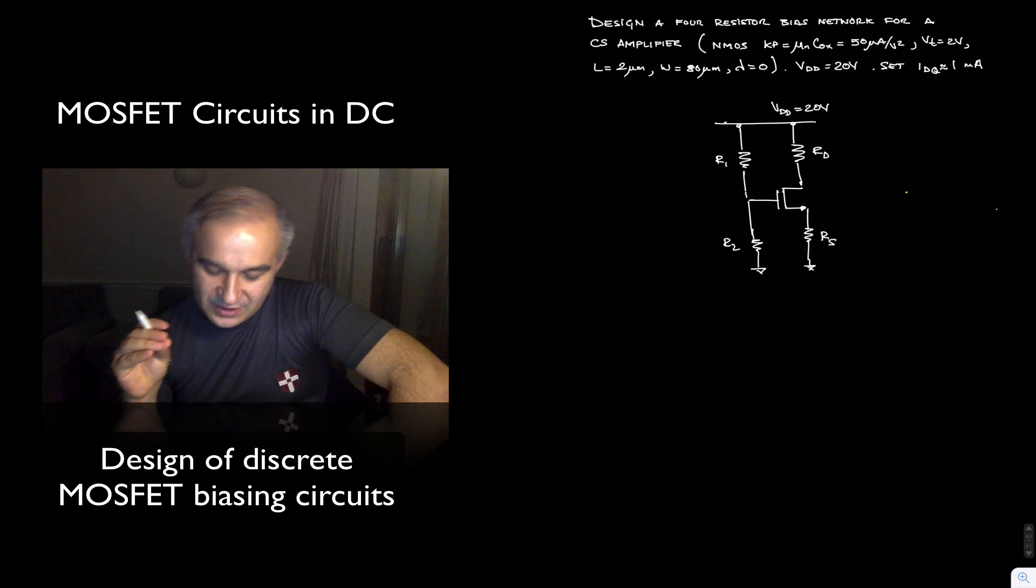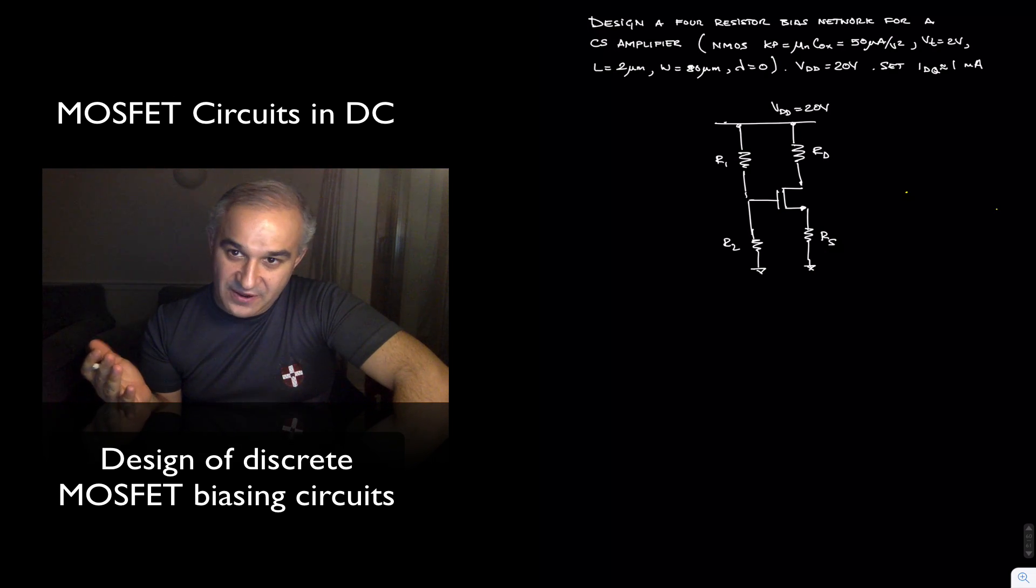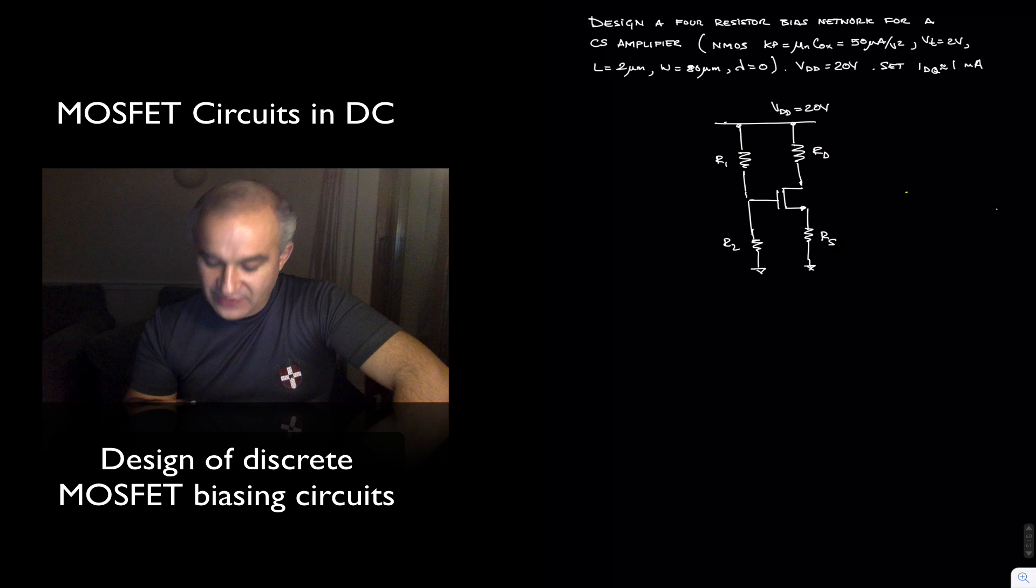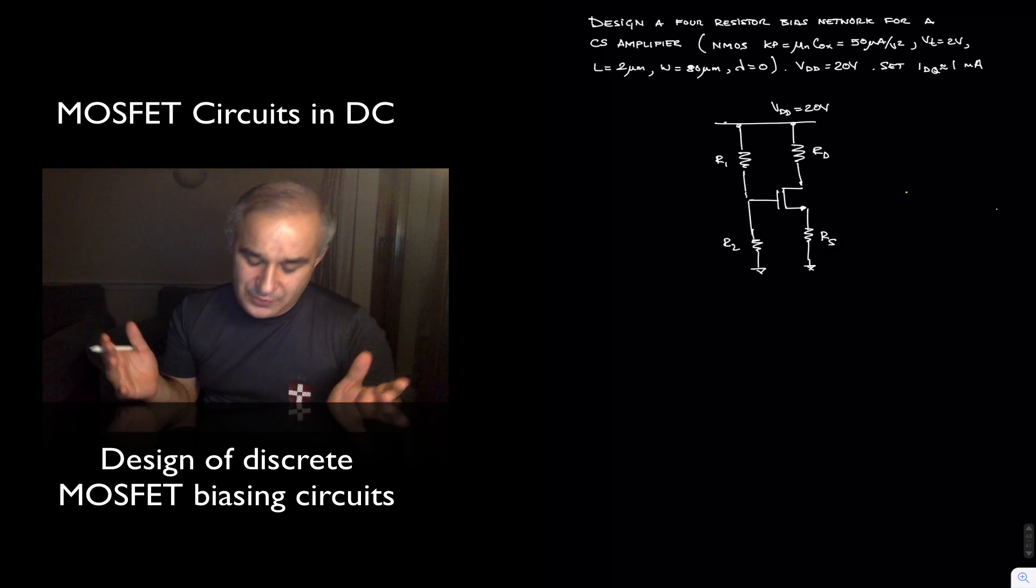Hello, let's do another example. So in this case, we're going to design a four-resistor biasing network for a discrete common source amplifier using an NMOS. We have some NMOS parameters there. And let's go over a step-by-step design procedure.